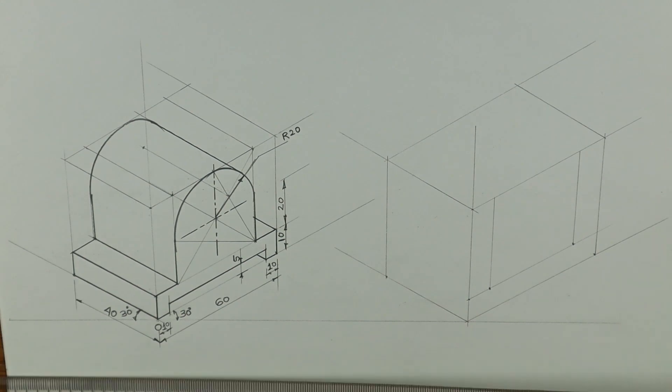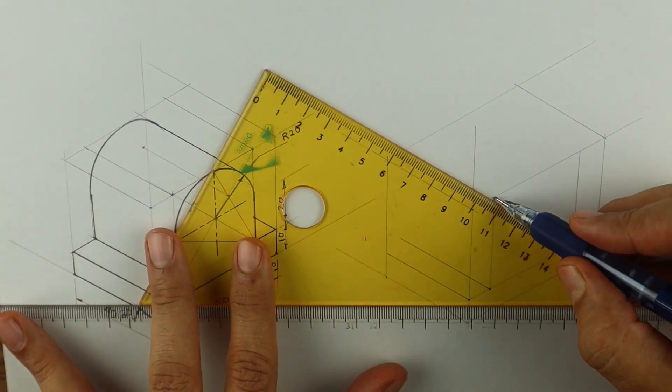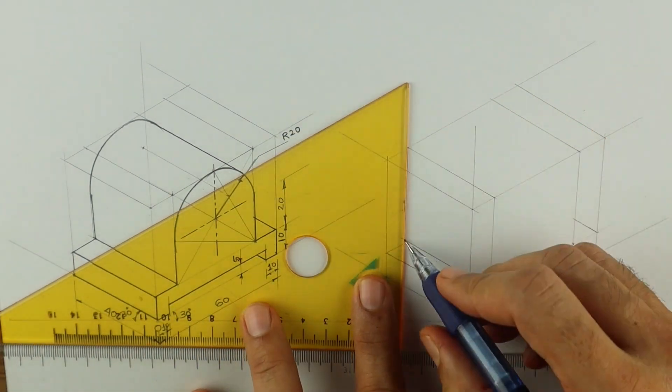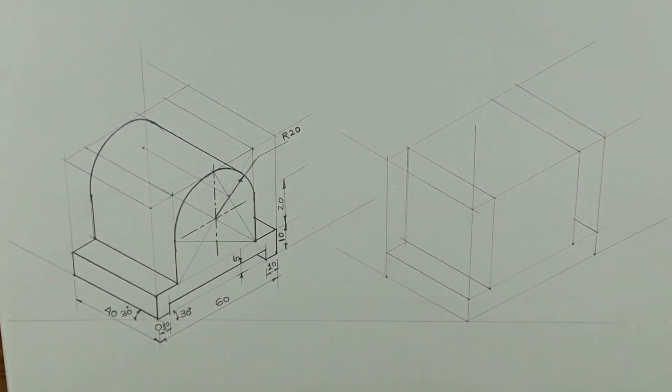After drawing that, we can take all the points behind by 40, because width is 40. Always remember the longer side we will take as length.